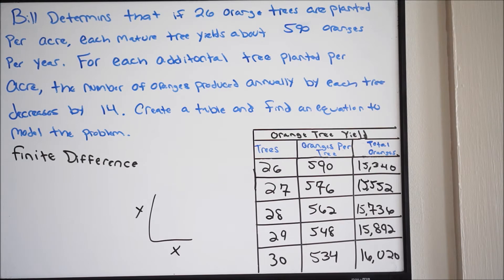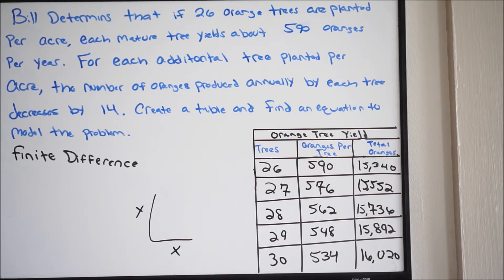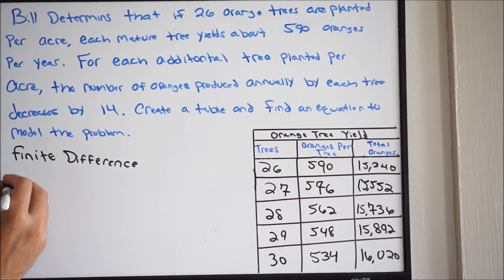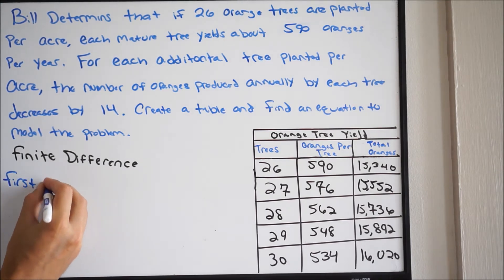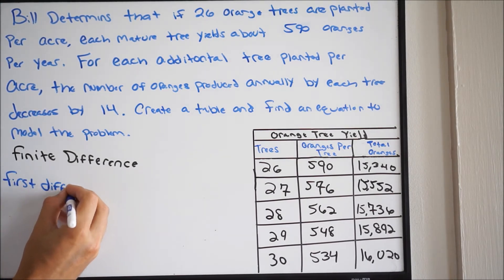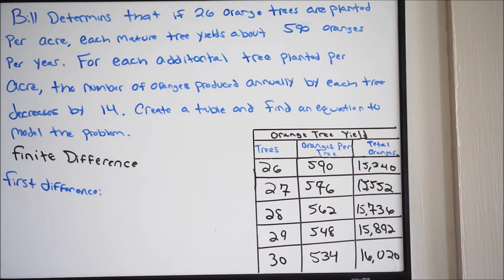When you do the finite difference, what you're trying to do here is compare the y values — you want to look at the change in the y value. You want to try to find where the change in the y value is the same across all of them, and that will tell you what relationship you're dealing with. We're going to do first difference first.